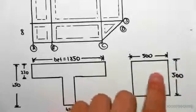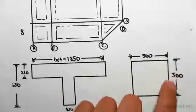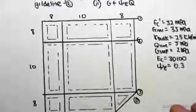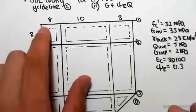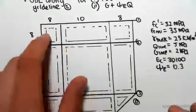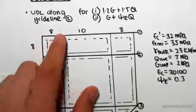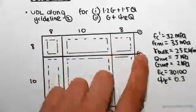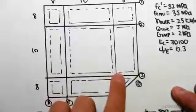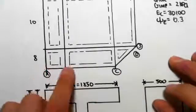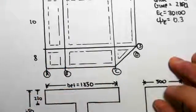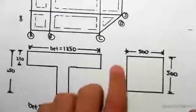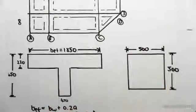I'm going to say that all the columns are 500 by 500. All the columns are at intersections of beams — there, there, there, and so on at all the intersections. Those columns are 500 by 500.